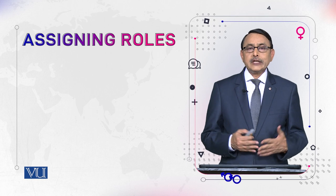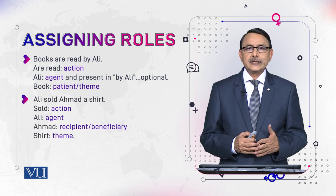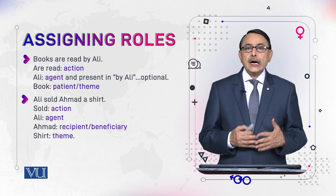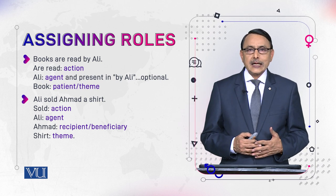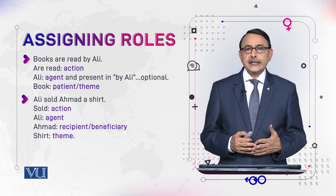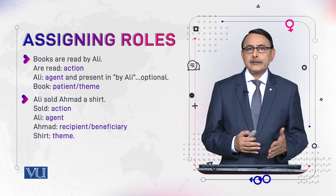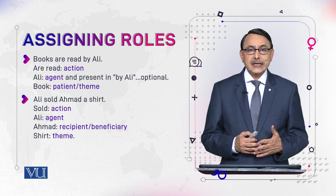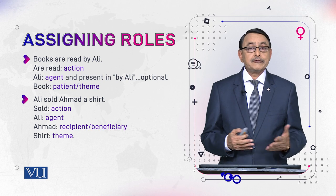Another example to understand how verb meaning and word order determines the role of participants in some action. In the sentence 'Books are read by Ali,' 'are read' is the action — this is passive voice. Ali is the agent, but the agent is not in its usual position; it moves to the position where it is part of the prepositional phrase 'by Ali,' and in that position it becomes optional. Optional means we can delete it from the sentence in passive voice.